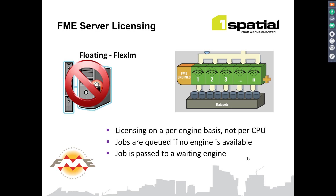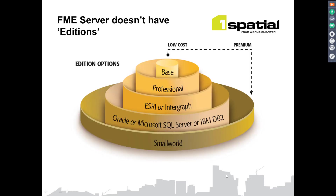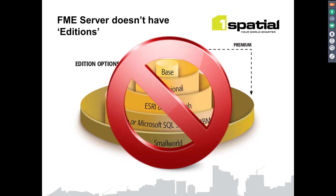How does it work in practice? Let's say you have two engines available and you receive three job requests. Two jobs will run, one on each of the available engines, and the third will be queued until one of the engines finishes and becomes available. Importantly, jobs are not lost — they're queued in the system waiting for an engine. Also, unlike FME Desktop where your license determines what formats you have access to, FME Server's license restricts the number of engines but not what workflows you can run. It's the license of your FME Desktop that determines this, so you must have a Desktop license to use FME Server.